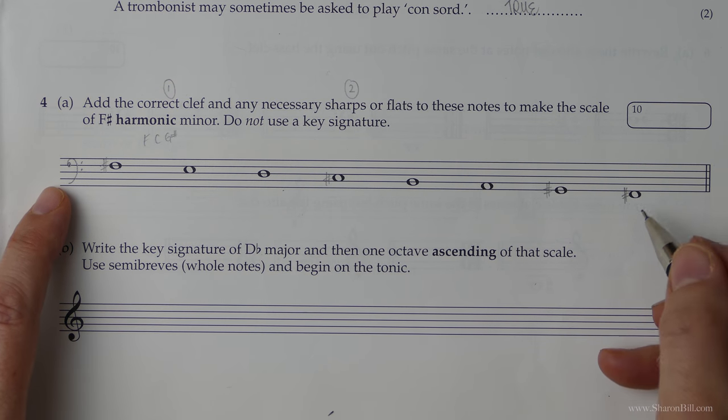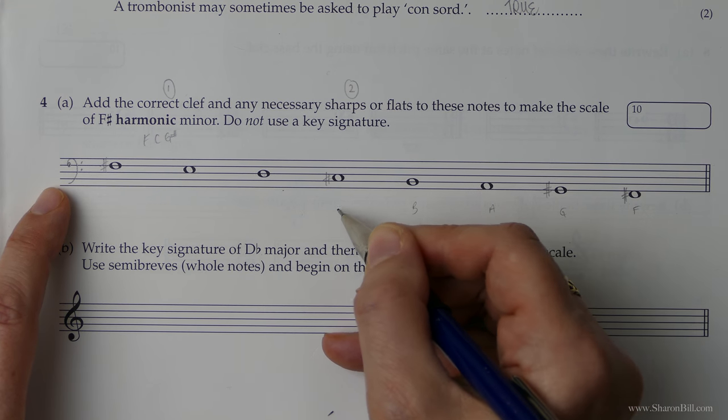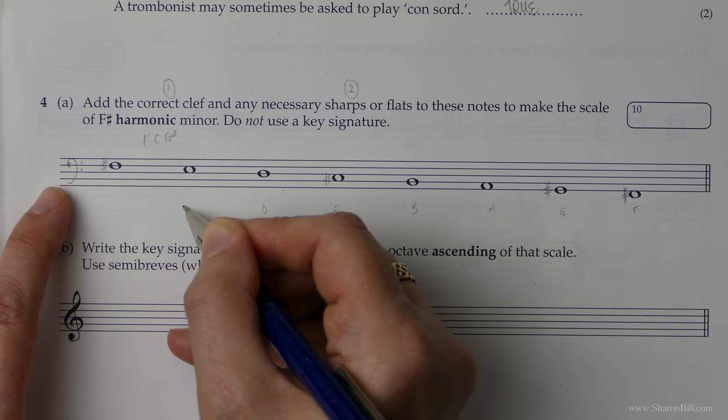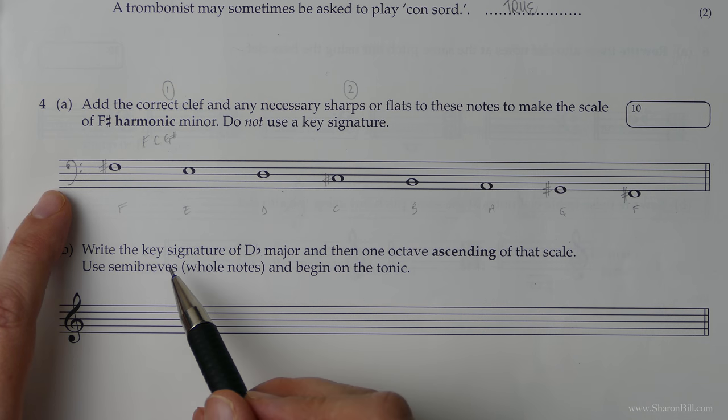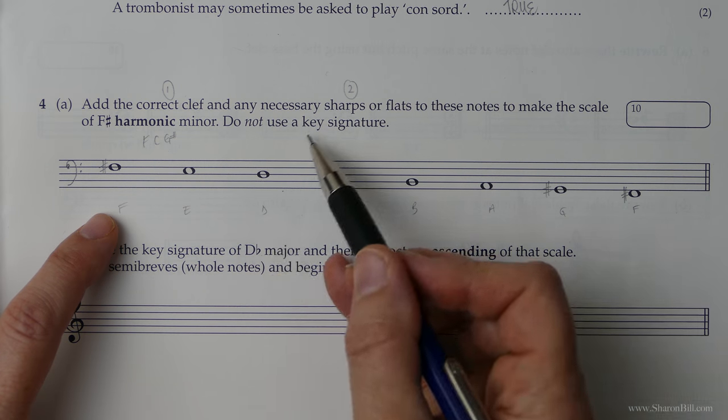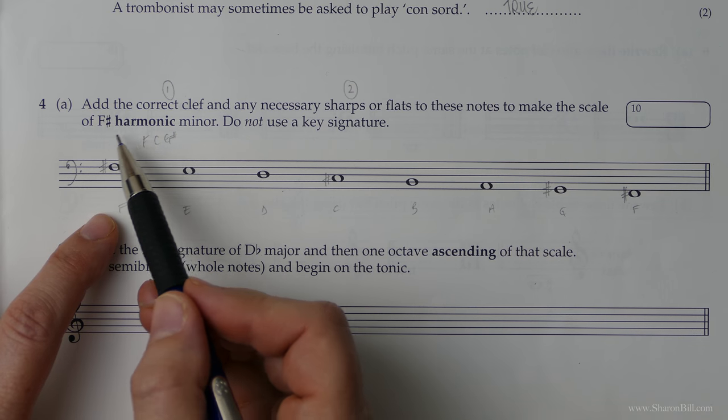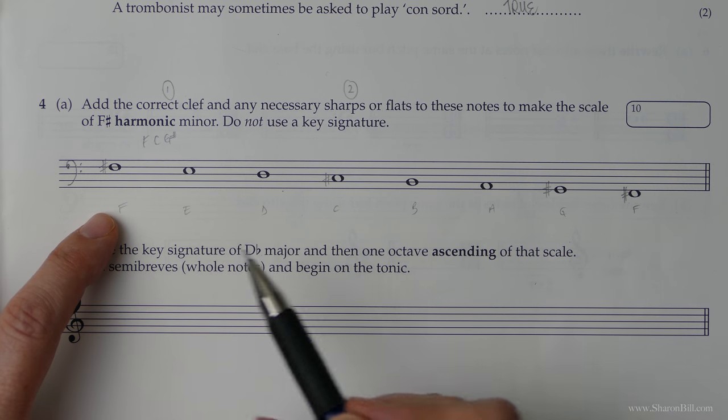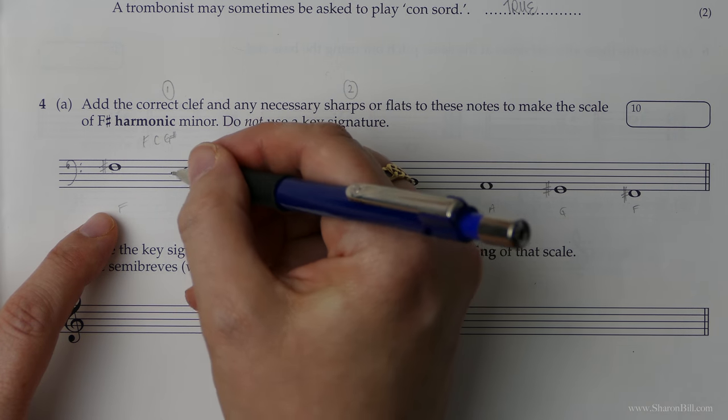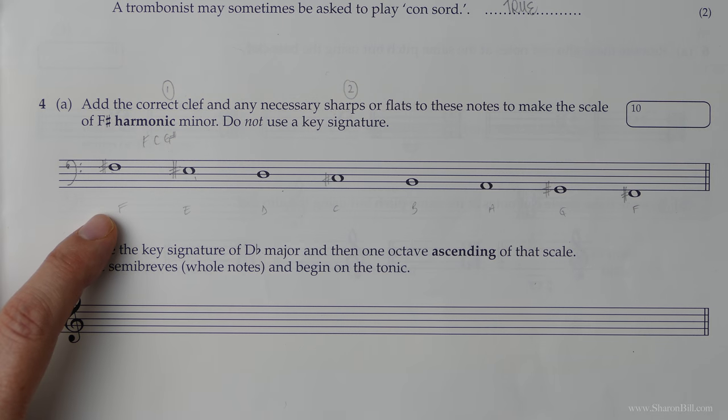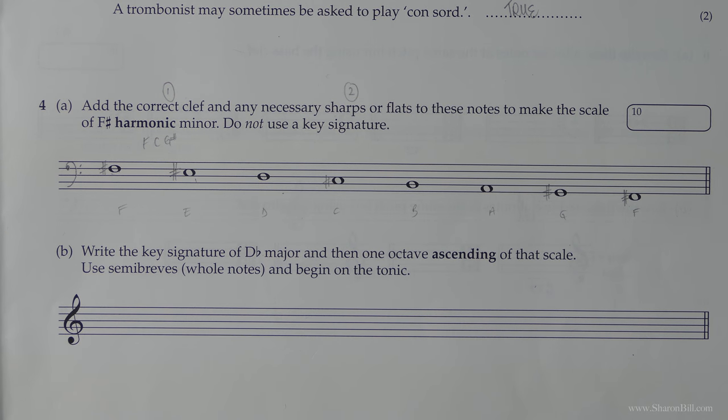If you're not comfortable reading bass clef, just write your letter names underneath: F, G, A, B, C, D, E, F. And then you're just making that easier to think. Do anything you can to make it as easy as possible. That's the key signature now added as accidentals. But to make it harmonic minor we need to raise the seventh. Remember we're descending now, so it's eight, seven, and that gives us an E sharp. So that's that complete, nice and easy.